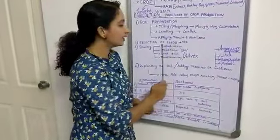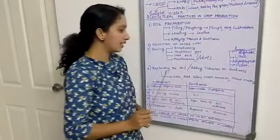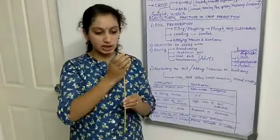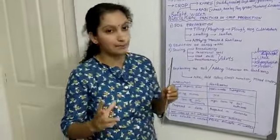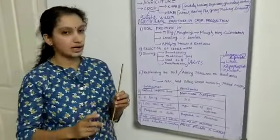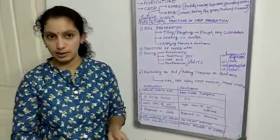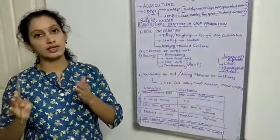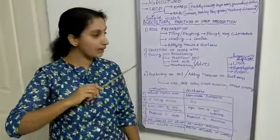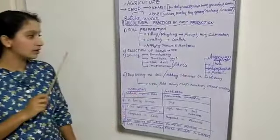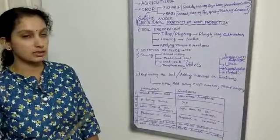Next is seed drill. Here we have a funnel shape and many long iron tubes connected to many ploughs. At one time, we can sow many seeds at proper depth with enough distance between each seed. The seed drill also covers the soil so no birds can eat the seeds we've sown.